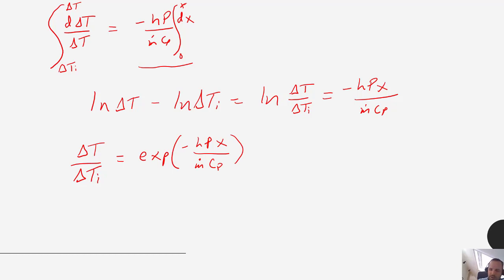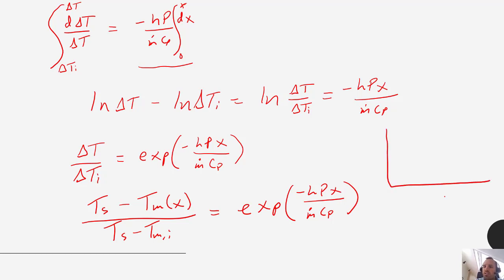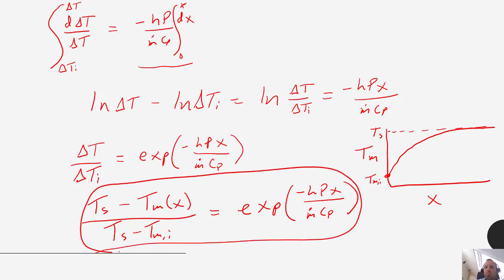So that is our equation. We can make that substitution where we're reversing this substitution we made and we end up getting that Ts minus T mean as a function of x over Ts minus T mean comma i is equal to the exponential minus h p x over m dot c p. So basically what this equation tells us is that we would expect to see, if this is our x and this is our mean temperature, we're going to have this inlet T_m,i. We will indeed see our temperature as it goes down the length of the pipe asymptotically approach the line. So if you were to take this equation, solve it for T_m and plot it, you would get this. You're going to exponentially approach your surface temperature.